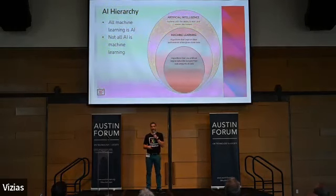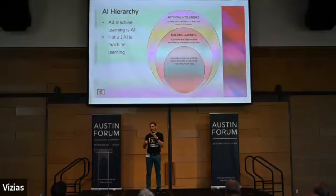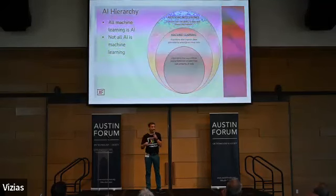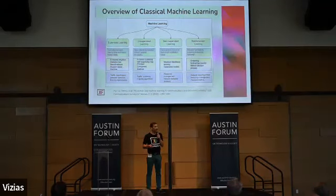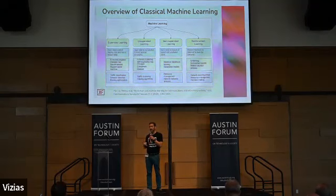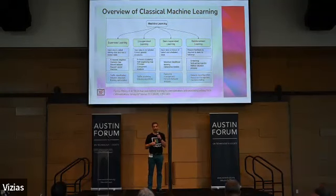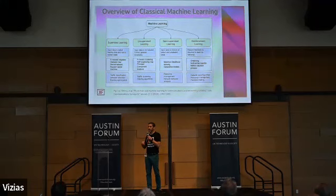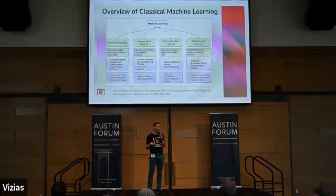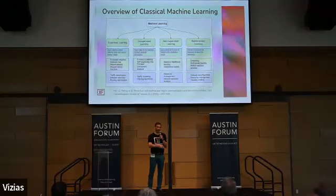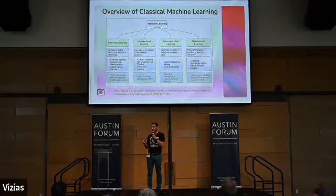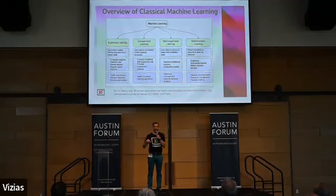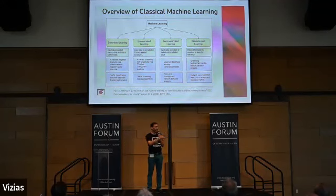So AI is the broadest category, machine learning is a subset, and deep learning is a subset within that. When you're starting to get into machine learning you'll hear different categories. Supervised learning is where you have some ground truth information — for example, showing a system examples of cats and dogs to train it, so that later on it can say whether test data is a cat or a dog. There are a bunch of different classical machine learning approaches in that space.